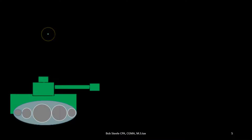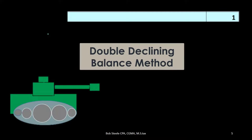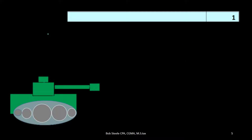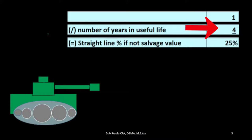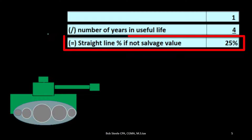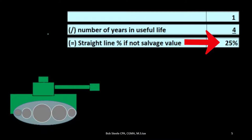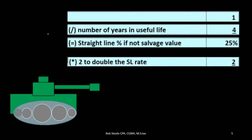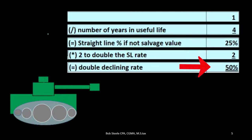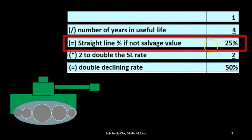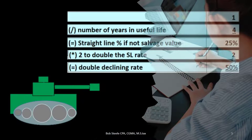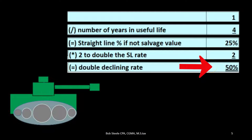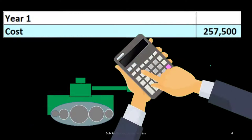Contrasting that to the double declining balance method — the most common accelerated method — we take one divided by the useful life of four years, which gives a 25% straight-line rate. If we double that, we get a 50% double declining rate. So where the straight-line rate applied to cost would be 25%, doubling it gives us the double declining rate of 50%.